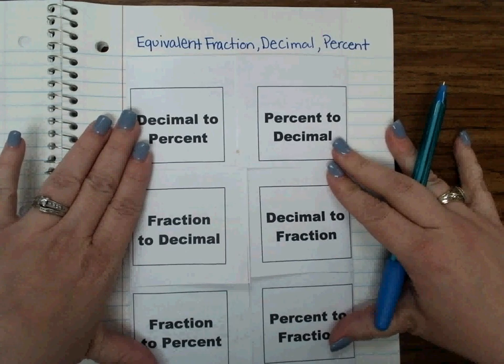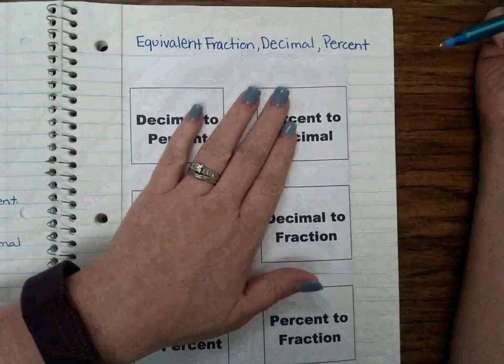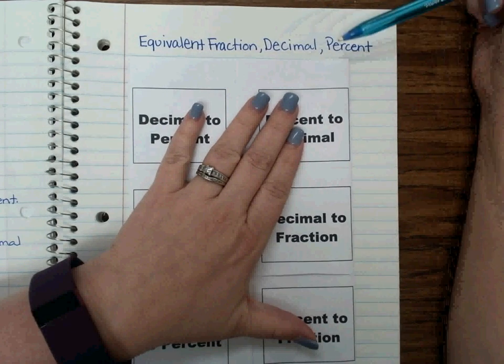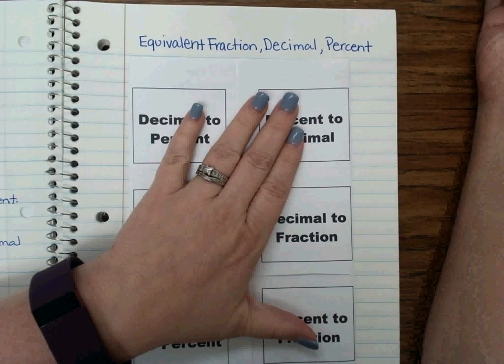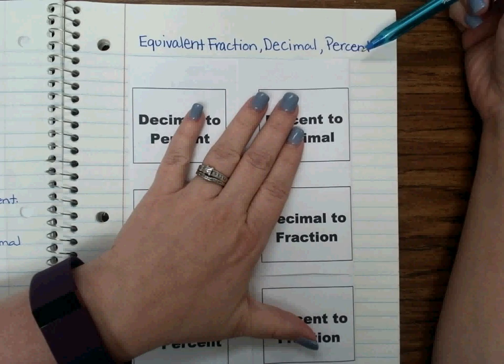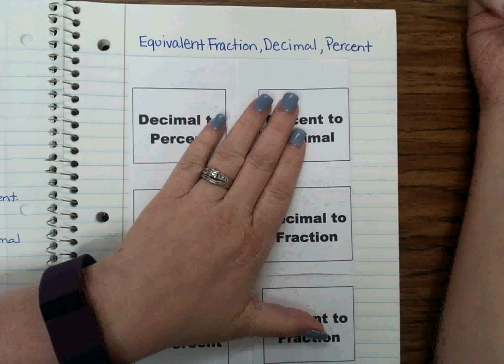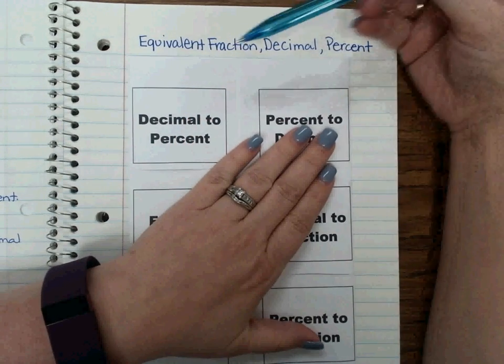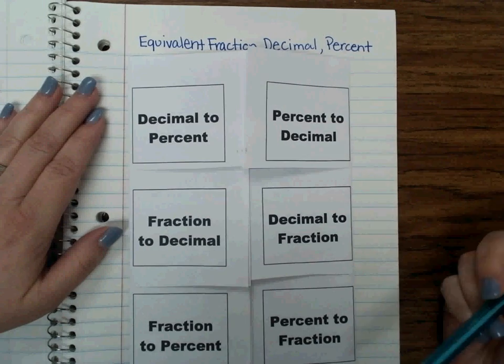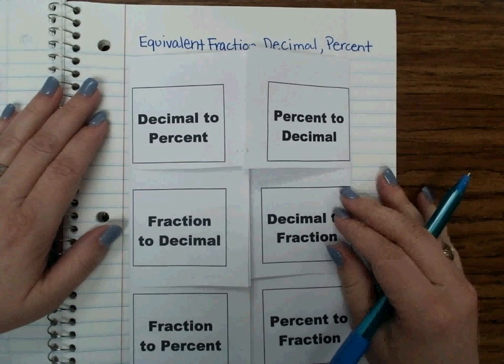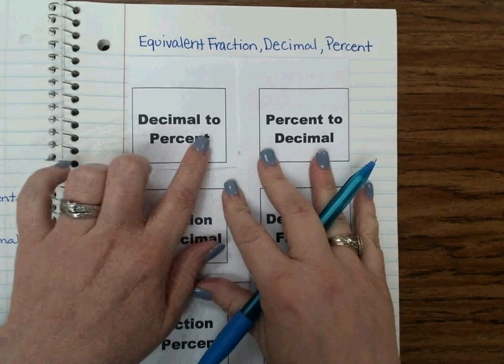Okay, so we're going to be talking about how any fraction, decimal, or percent can be rewritten into an equivalent form of a percent, decimal, or fraction. And there is basically six combinations of ways that we can do that, to do those conversions. We're going to start with our first one, which is decimal to percent. I started with the easy ones first.